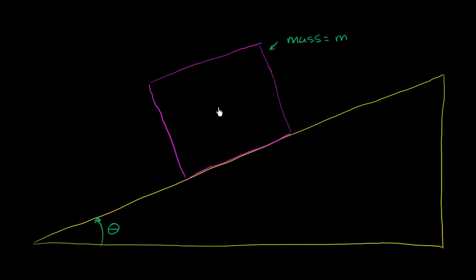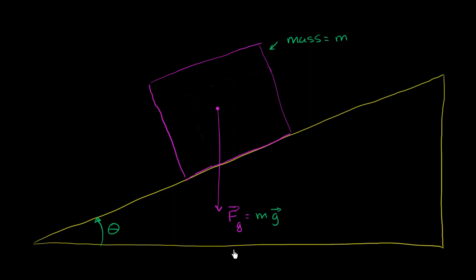We're going to have the force of gravity starting right at the center of this mass. The force due to gravity is going to be equal to the mass times the gravitational field near the surface of the Earth — mg — and it's going to be directed downwards. Now, it gets a little confusing because you can't really say that the normal force is acting directly against this force, because the normal force acts perpendicular to a surface.